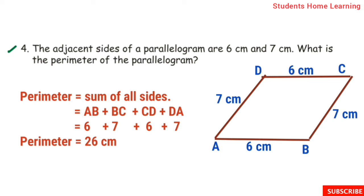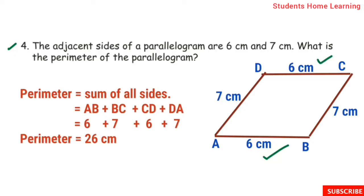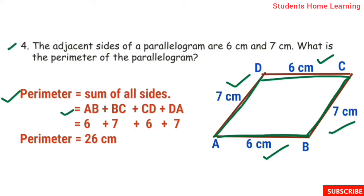Fourth sum: the adjacent sides of a parallelogram are 6 cm and 7 cm. What is the perimeter of the parallelogram? In a parallelogram, opposite sides are equal, so AB = CD = 6 cm and BC = DA = 7 cm. Perimeter equals AB plus BC plus CD plus DA: 6 plus 7 plus 6 plus 7 equals 26 cm. Perimeter is equal to 26 cm.